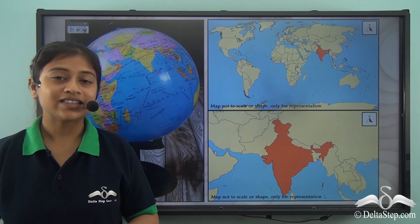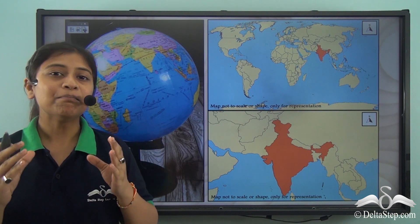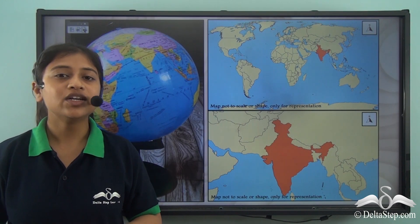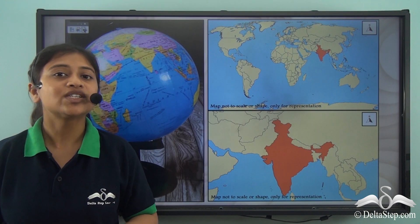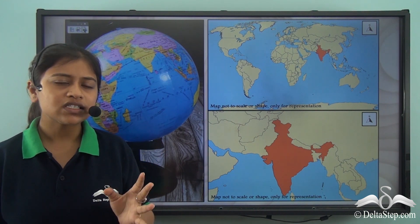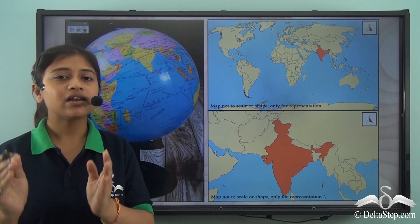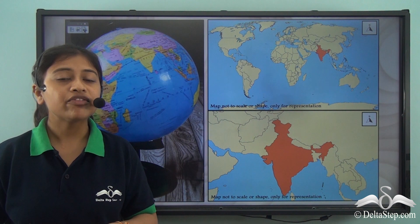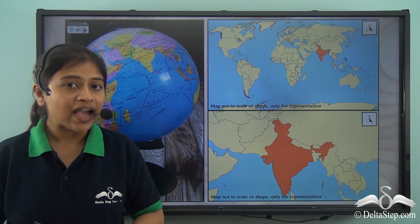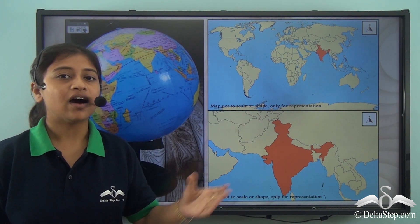We all know that the Earth is spherical in shape and the globe is a mini-representation of the Earth. The globe helps us to take a look at the entire Earth at once — all the countries, the major water bodies, the continents and everything. However, if we wish to study a particular part of the Earth or if we wish to draw the entire Earth on a flat surface, then it is not a globe anymore. It can then be called a map.